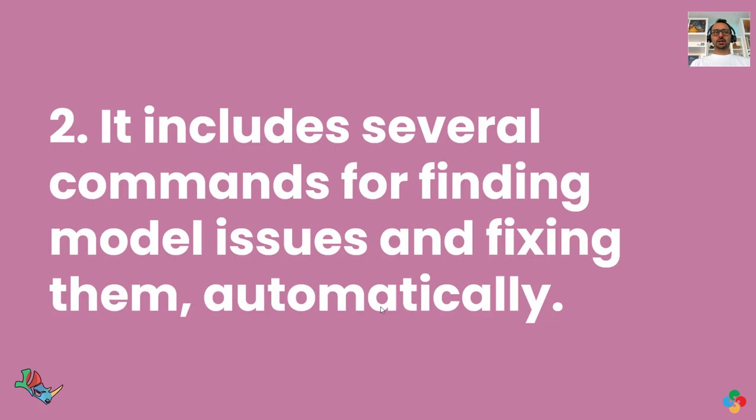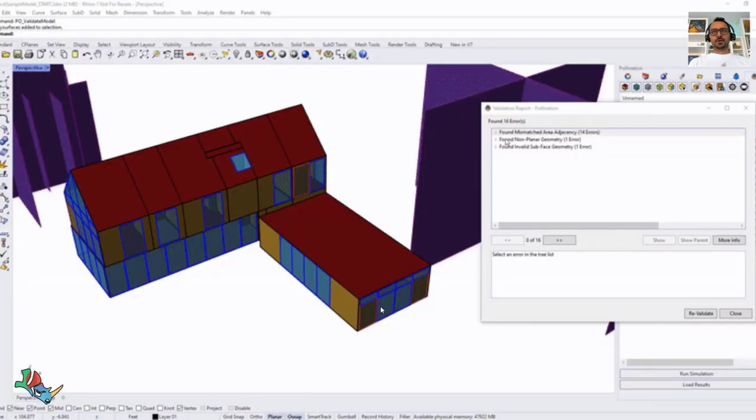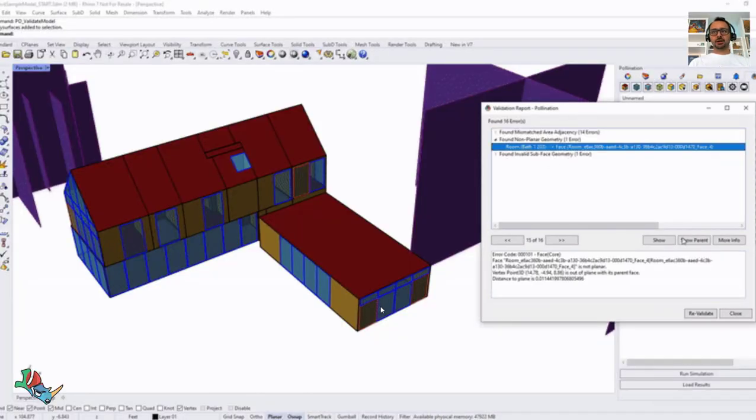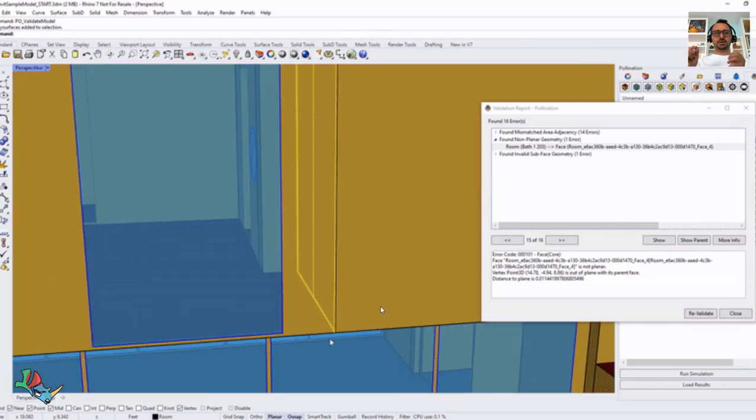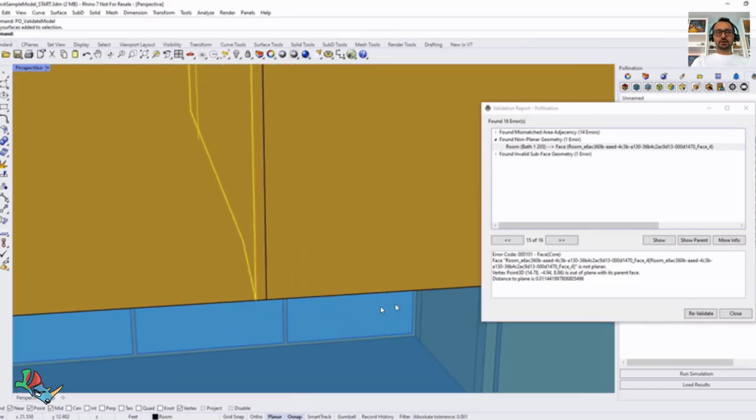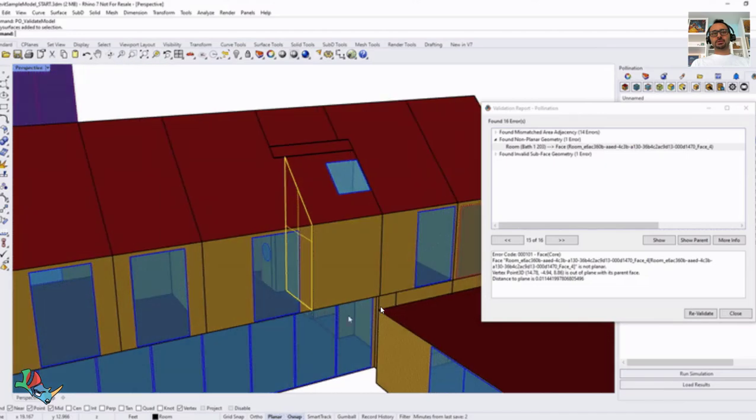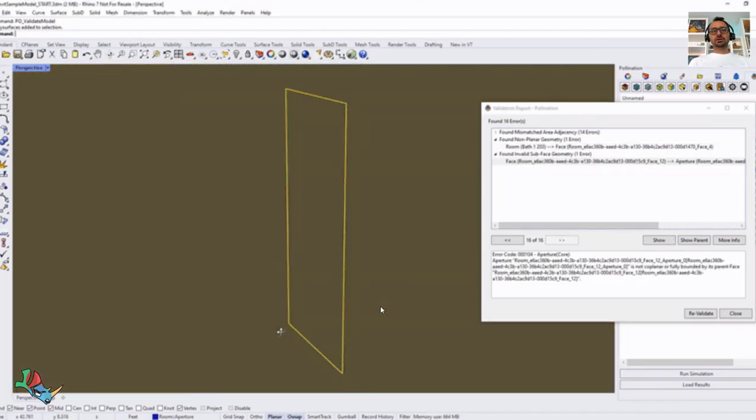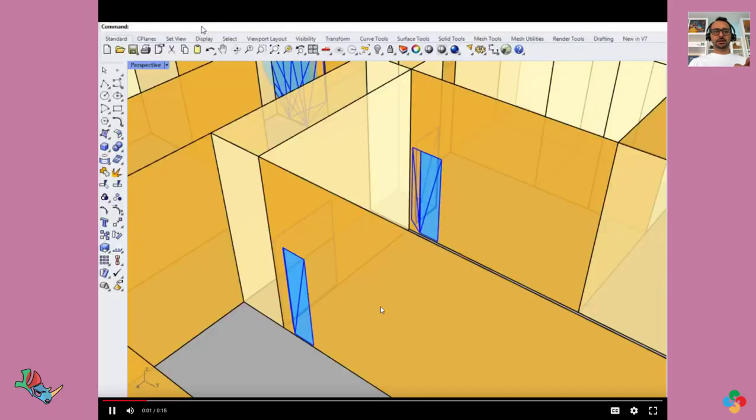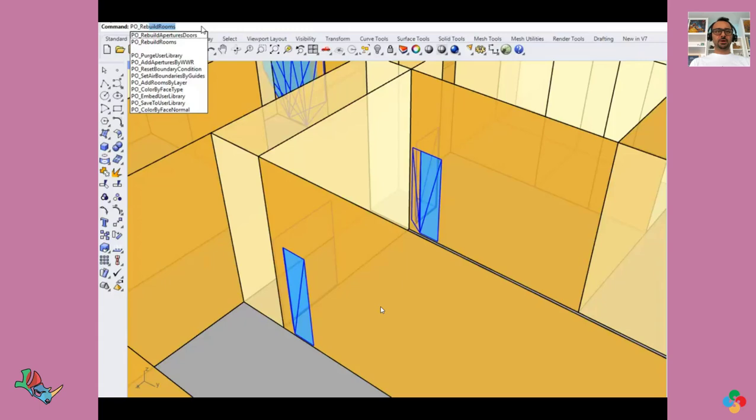The second one includes several commands for finding and fixing issues. There is a validation routine that basically not only tells you what the error is, it shows you where the error is. And I know some other tools have something similar, a limited version of this. But we don't only show you the problem, we also have commands to fix them for you automatically.